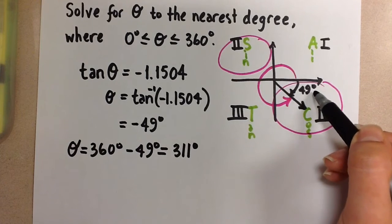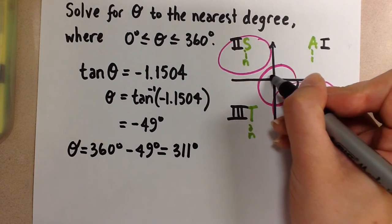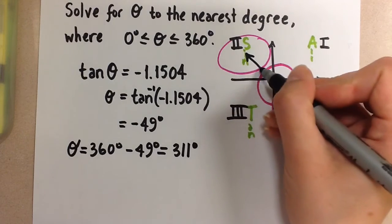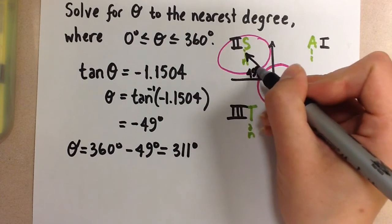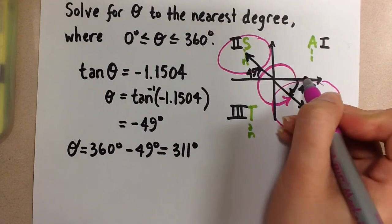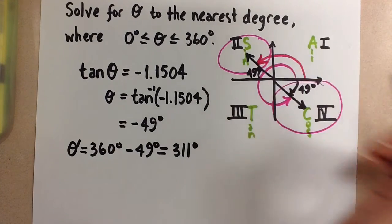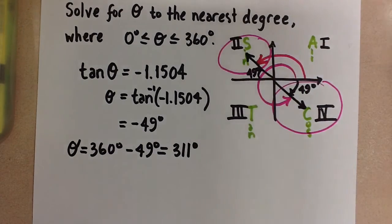So if we have a related acute angle here of 49 degrees, the related acute angle in this quadrant is also going to be 49 degrees here. And now our job is to find the principal angle made with this terminal arm.